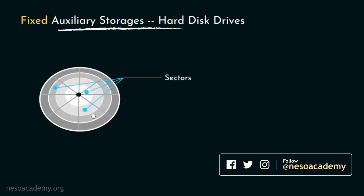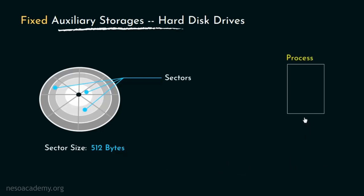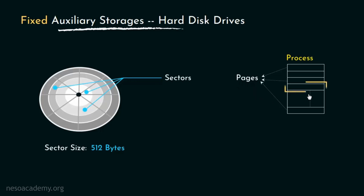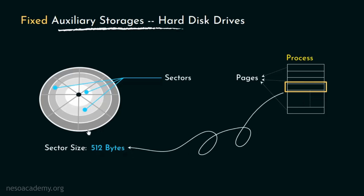These small portions are the sectors. Usually the size of each sector is 512 bytes, if not mentioned otherwise. If you remember, during the session on direct memory mapping, we learned that processes are subdivided into pages, and each sector is generally capable of storing one page. Following this convention, the standard size of every page is at least 512 bytes. Additionally, the size of the sector is the smallest unit of data that the hard disk is able to transfer to any other peripheral.